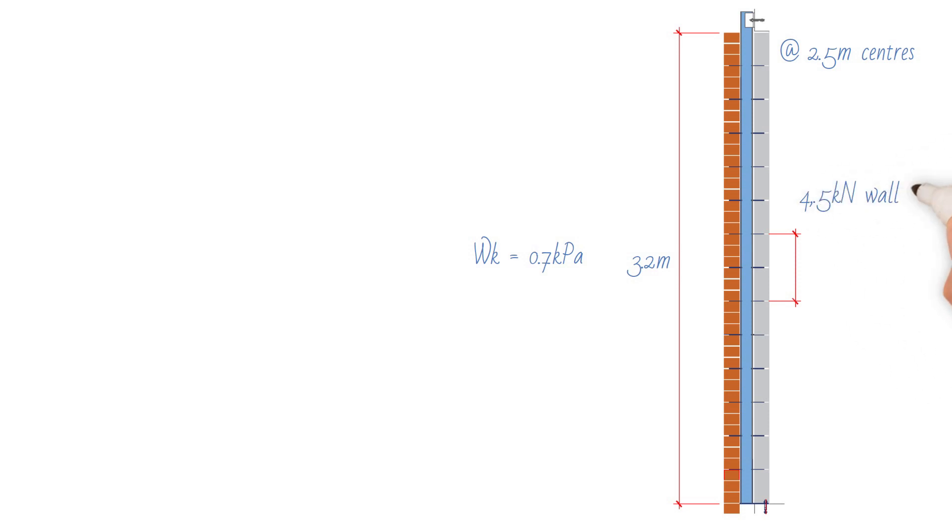4.5 kilonewton wall ties capacity in tension and compression are used to transmit wind load from masonry to windpost. Wall ties provided at a maximum of 450 millimeters centers.